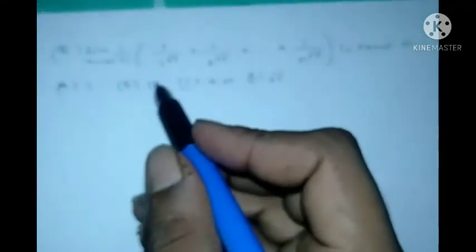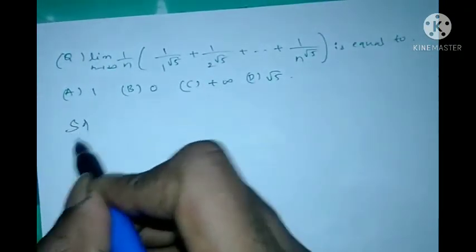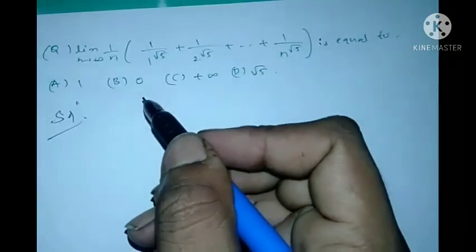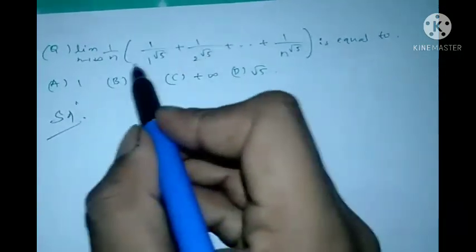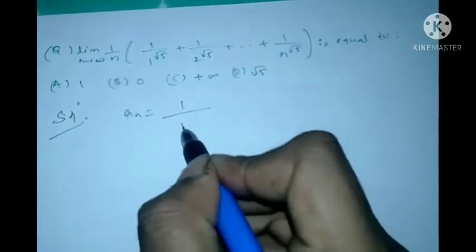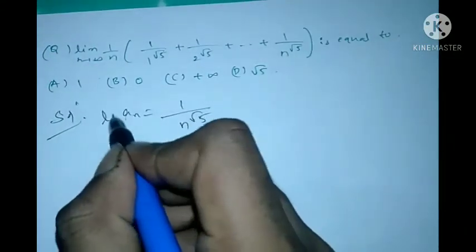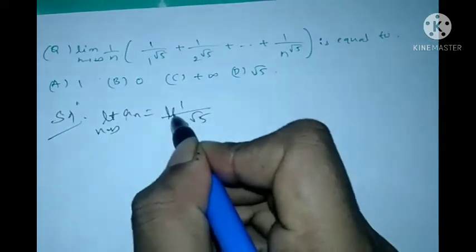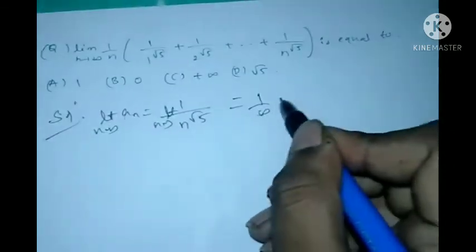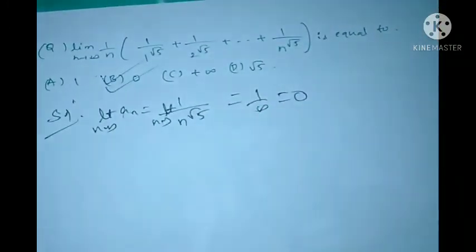Another problem also from KSET Mathematical Sciences uses the same result — Cauchy's first theorem on limits. Here the n-th term is a_n = 5^(1/n). Applying the limit as n tends to infinity: 5^(1/∞) = 5^0 = 1, so the direct answer is 1.